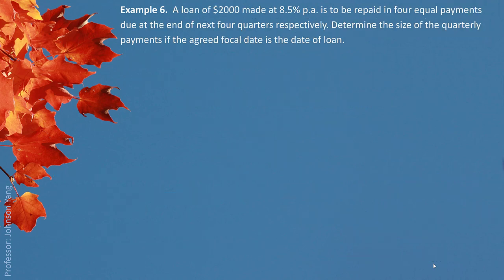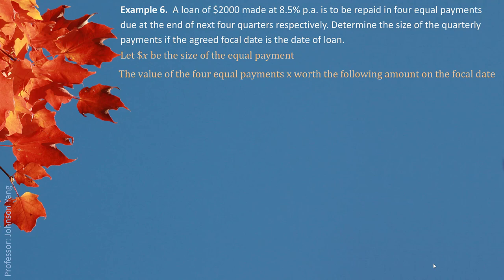Example 6. A loan of $2,000 made at an 8.5% interest rate is to be repaid in four equal payments due at the end of the next four quarters respectively. Determine the size of the quarterly payments if the agreed focal date is the date of the loan — that means the beginning. We use X to represent the equal payment size. We need to switch every single one: the first X switches back one quarter, the second X switches back two quarters.